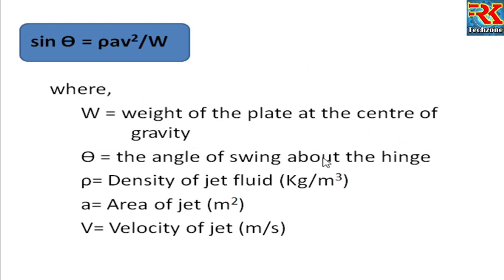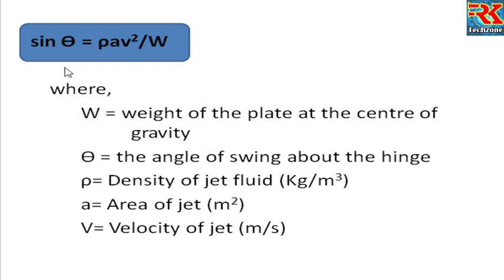We will substitute into the equation. Sin theta equals rho A V squared divided by W, where rho is density, A is area, V is velocity, and W is the weight of the plate. Theta is the angle of swing about the hinge.